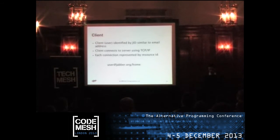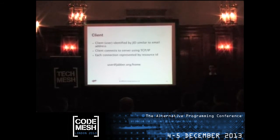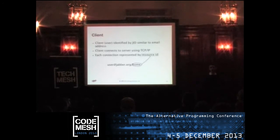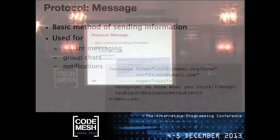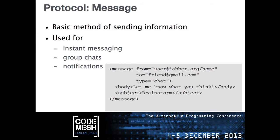Here's how you identify a client — it looks very much like an email address, with an extra bit at the end called a resource ID. This lets you differentiate between different connections of the same user who may be connecting from mobile, desktop, and home at the same time. XMPP is an XML-based protocol which has three fundamental XML elements. One is for messaging — the message element — which you use for sending messages to users or to group chats.